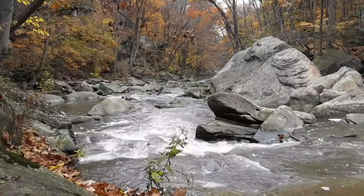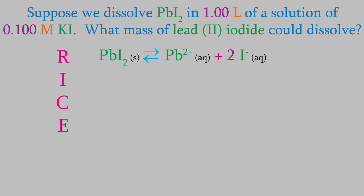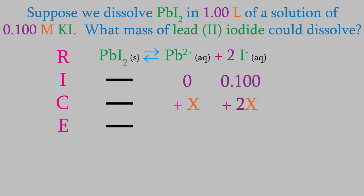Suppose we add lead(II) iodide to a liter of solution — but this time, instead of pure water, we add it to a solution of 0.100 molar potassium iodide. How much of the lead iodide will dissolve? We start with a rice table as usual. Here's the balanced reaction; we can leave out the data for the solid reactant. The initial concentration of lead ion is zero, but this time we're starting out with an iodide concentration of 0.100. Remembering the 1-to-2 product ratio, the change in concentration is x for lead and 2x for iodide, giving equilibrium concentrations of x and (0.100 + 2x).